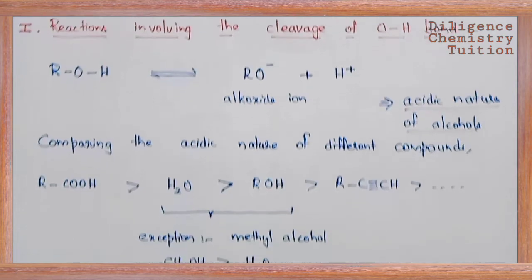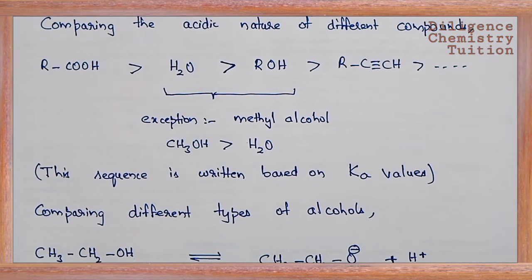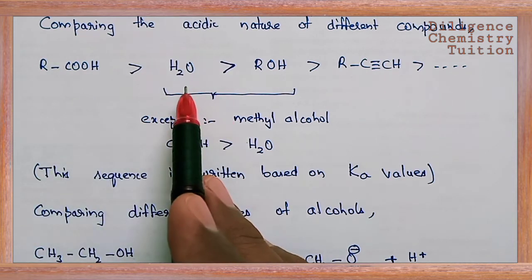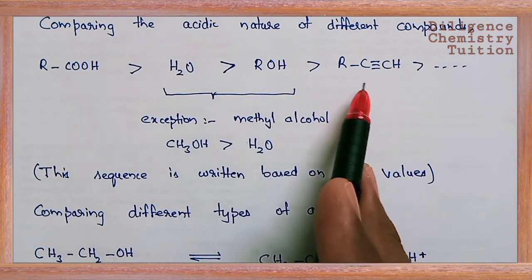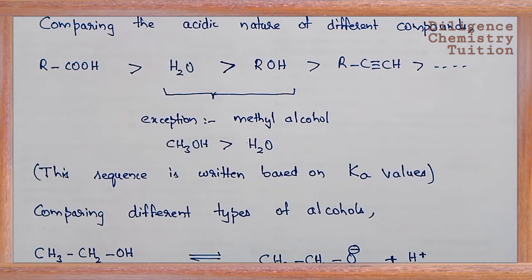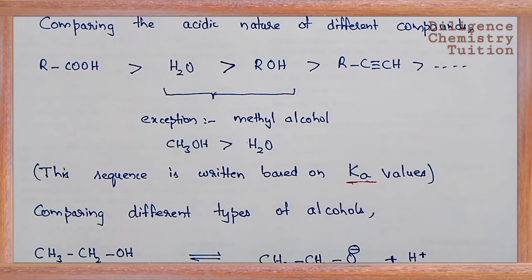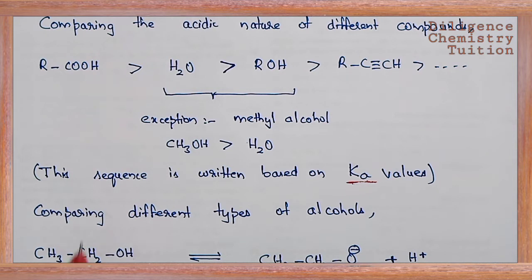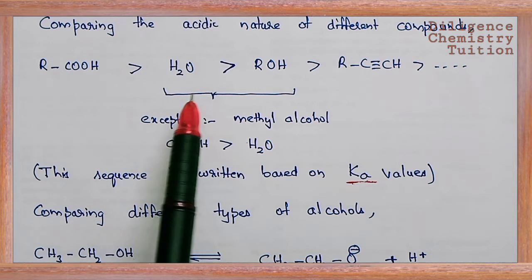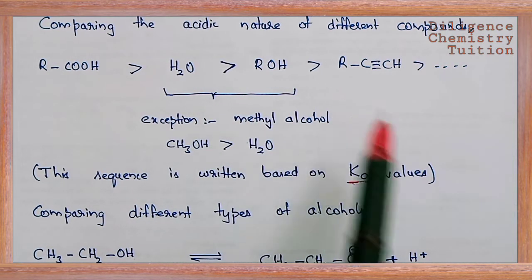Now I will compare the acidic nature of alcohols. The acidity sequence we choose is: carboxylic acid (RCOOH) > water > alcohol, and so on. This sequence is based on Ka values — the acid dissociation constant values. So, carboxylic acid is more acidic than water, which is more acidic than alcohols, which is more acidic than acetylene.